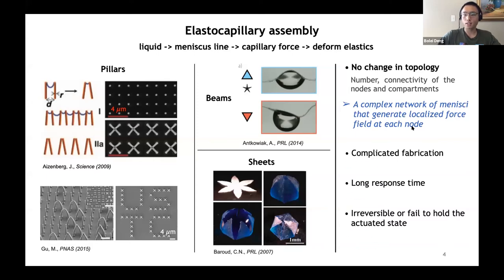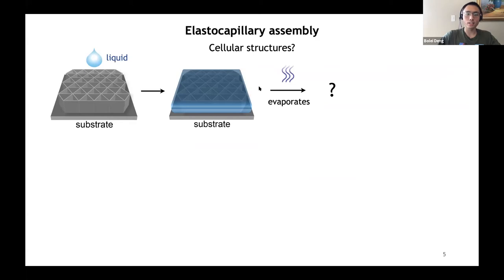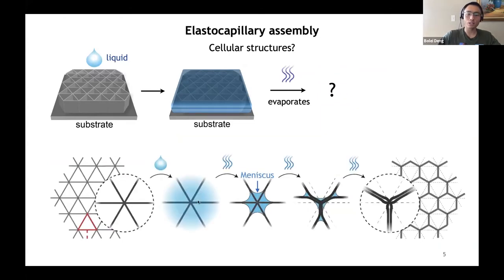If we apply this method to a cellular structure, then the complex network of many sites may serve as the desired localized force field at each node. This kind of procedure is also compatible with simple fabrication, fast evaporation time, and adhesion can serve to maintain the actuated states. The question now is: what will happen if we add a droplet of liquid to the cellular structure and let it evaporate? As the liquid starts to evaporate, it will form a meniscus near the node, which will try to zip up neighboring edges and finally transform the connectivity of the nodes, and zooming out, the topology of the lattice could also be changed.